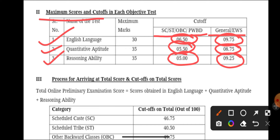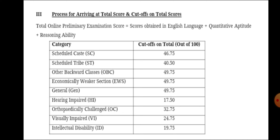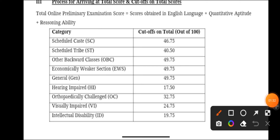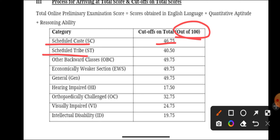Now let's see the overall cutoff of IBPS PO prelims. For Scheduled Caste the cutoff is 46.75 out of 100. Scheduled Tribes it is 40.50. Other Backward Classes OBC the cutoff is 49.75. Economically Weaker Section EWS cutoff is 49.75.